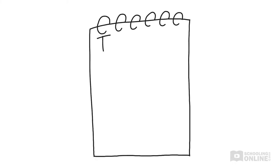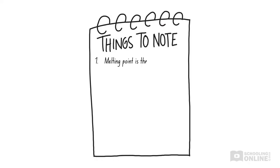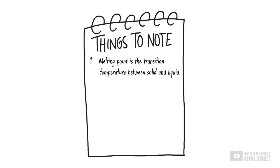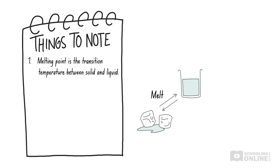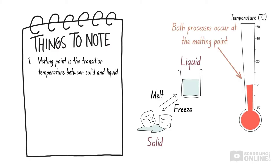Before we begin, let's quickly revise the definition of melting point. Melting point is the temperature at which a substance melts, or changes state from solid to liquid. This is also the temperature at which a substance freezes, or changes state from liquid to solid.